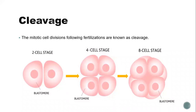The first division splits the zygote into two cells — this is termed the two-cell stage. Each cell is now called a blastomere. The second cleavage follows, and the two-cell stage is followed by a four-cell stage and then an eight-cell stage. The process of mitotic division then continues.